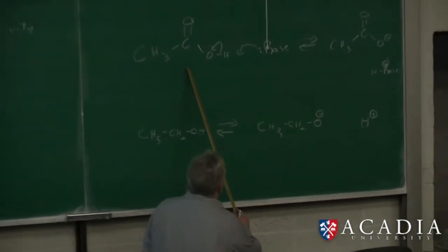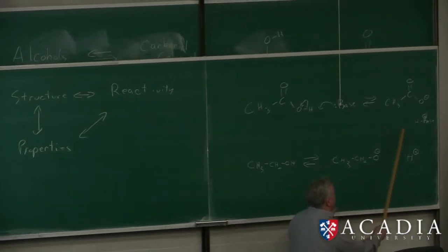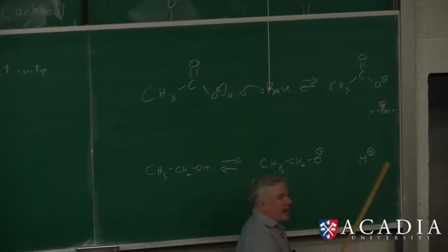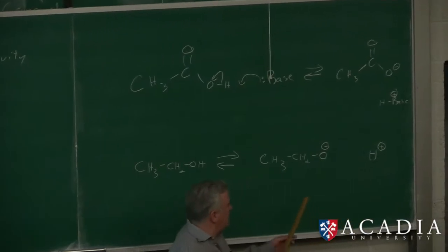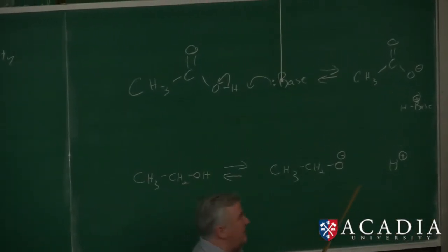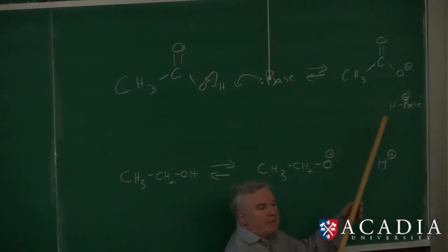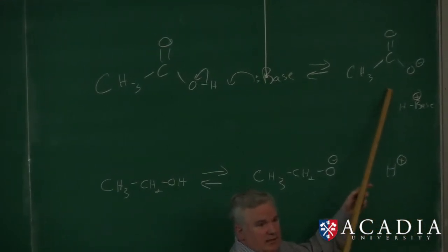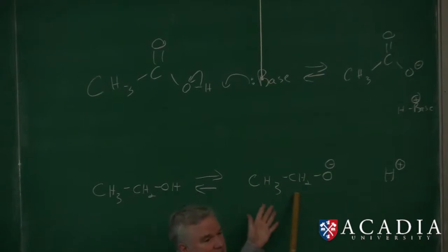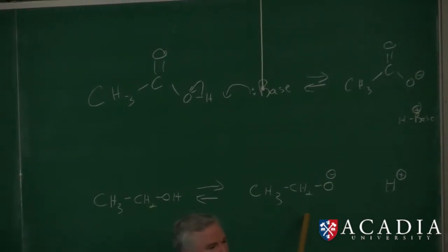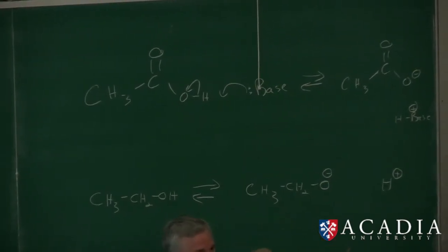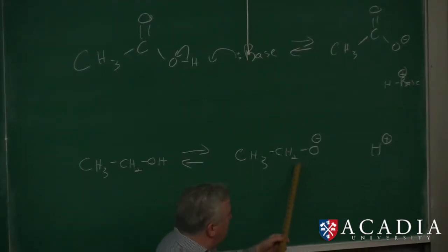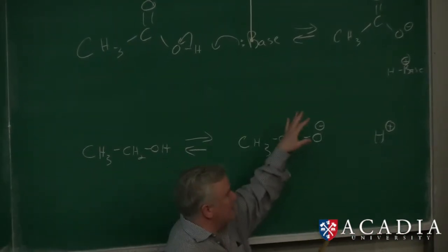The carboxylic acid is very much more acidic than the alcohol. What does that tell us about the stability of that anion versus this anion? The carboxylate is quite stable — it's quite happy to lose its proton. The alkoxide is less stable. Molecules don't have states of happiness, but we talk about them that way.